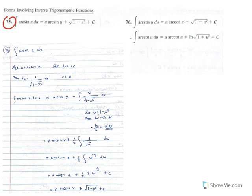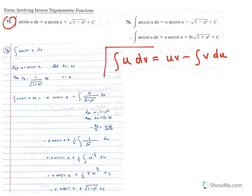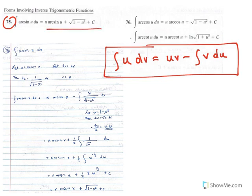For example, rule number 75 can be derived using integration by parts. Here's the integration by parts formula, and we'll see how that's applied to derive this integration rule for the indefinite integral of arcsin(u) du. To keep things more organized, I will use the indefinite integral of arcsin(x) dx, and after I find the antiderivative, we'll just replace x with u to get what we have here.